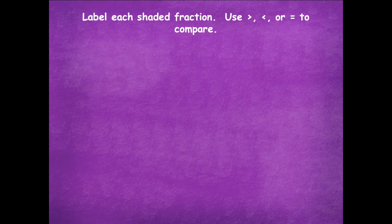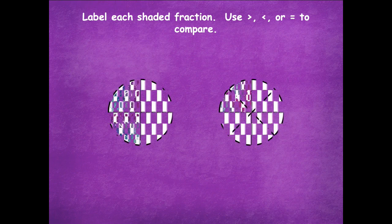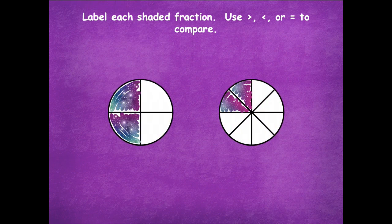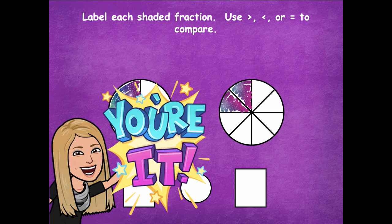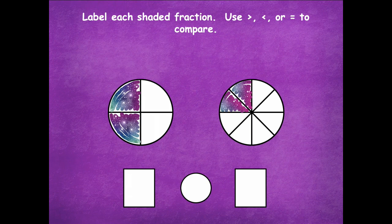We're going to label each shaded fraction and use greater than, less than, or equal to in order to compare. You'll write the fraction in each box and then in the circle in the center you'll place the comparison symbol. Pause the video, label the shaded fraction, compare, and then click play when you're ready to go over it together.